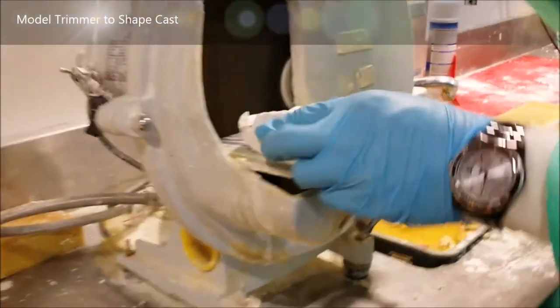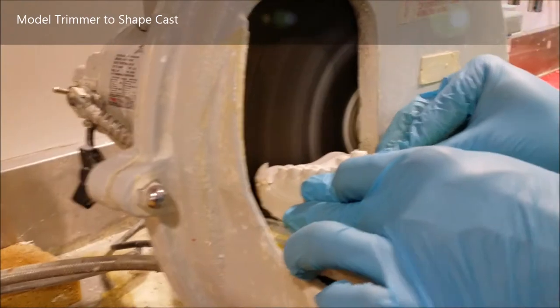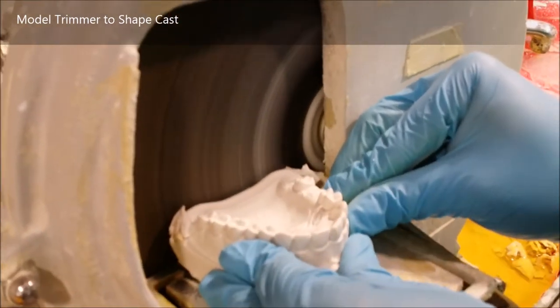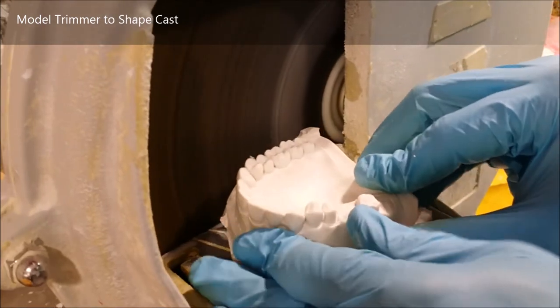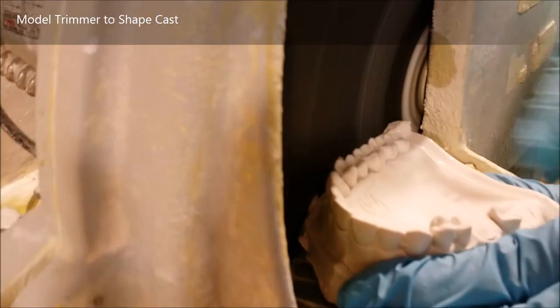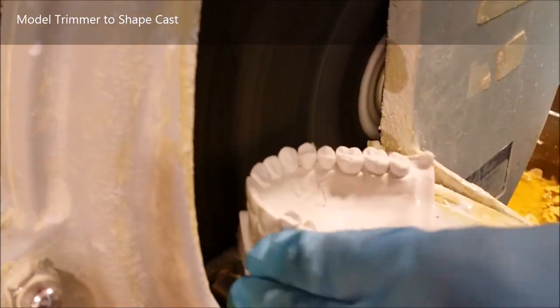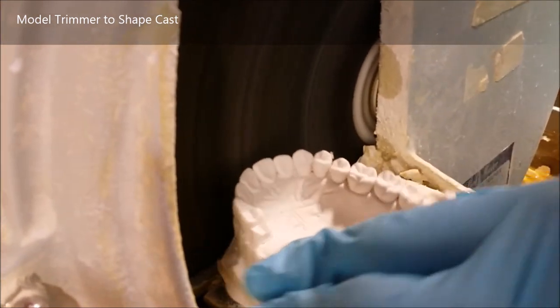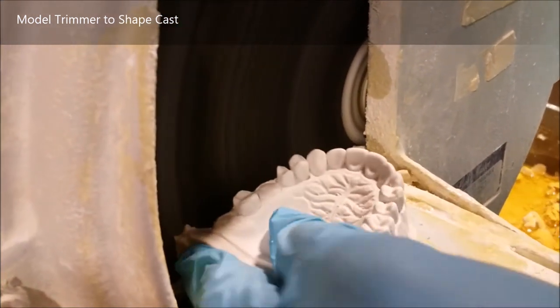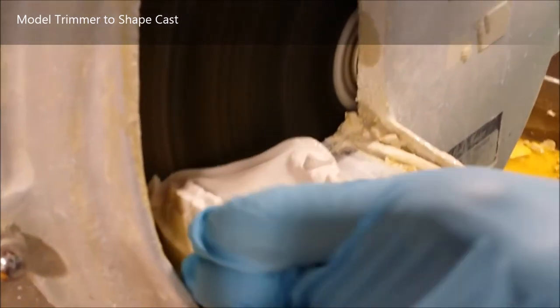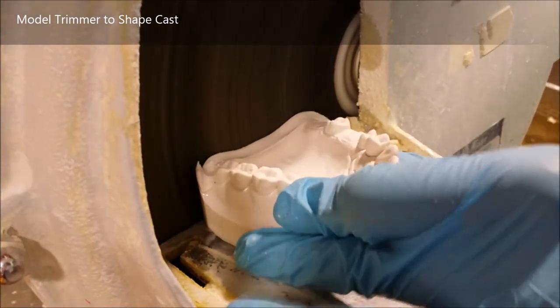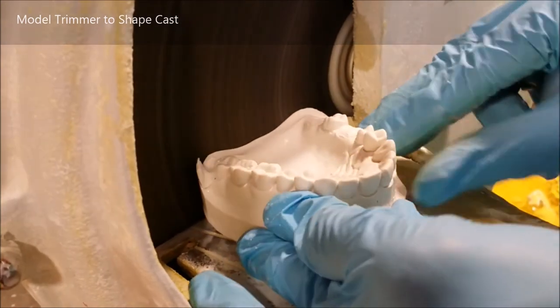In this case the cast seems fairly good, but we need to make sure that it is of the right dimensions and shape. So you take it to this machine, which is the model trimmer, and we're simply going to make sure that the cast follows the teeth. Since this was taken on a typodont, the shape it currently possesses is that of the typodont. We're going to get rid of this and cut it down.